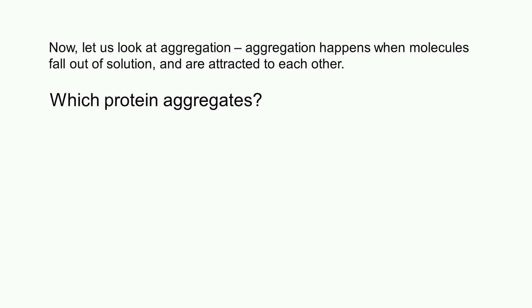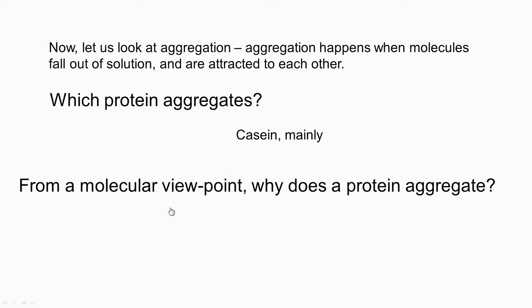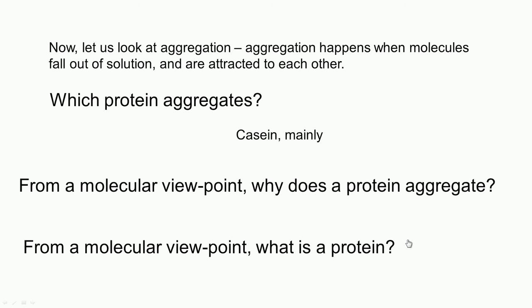Which protein aggregates in the case of curd formation? The answer — many of you may know it — is called casein. This is the protein that mainly aggregates when curd gets formed. From a molecular point of view, why does a protein aggregate? That is the next question we are going to ask. And before that, we realize we do not really know what a protein is. Therefore, we are going to ask the question: from a molecular point of view, what is a protein?